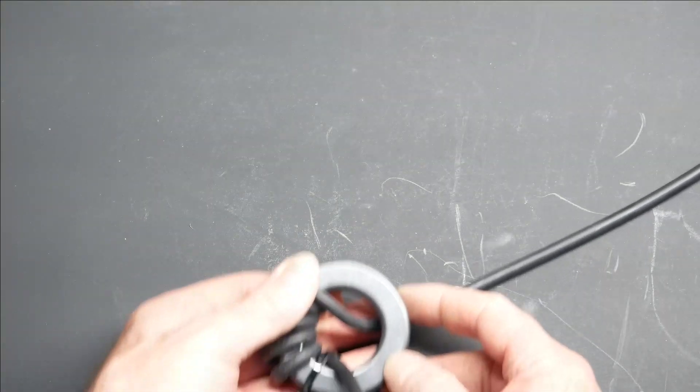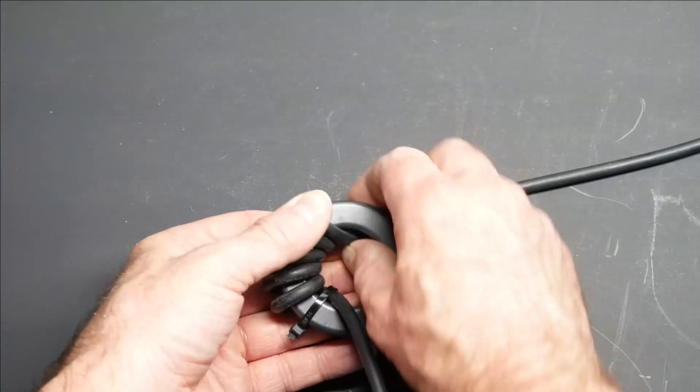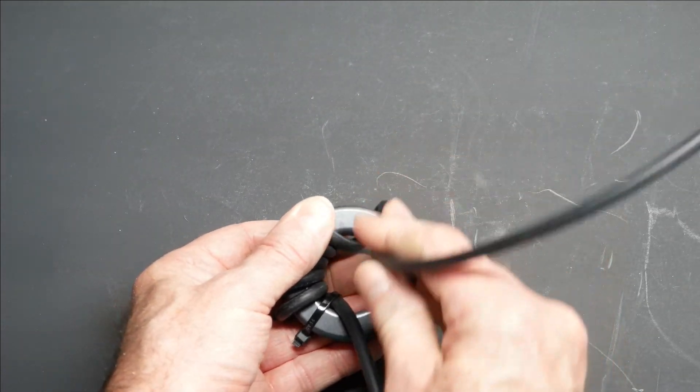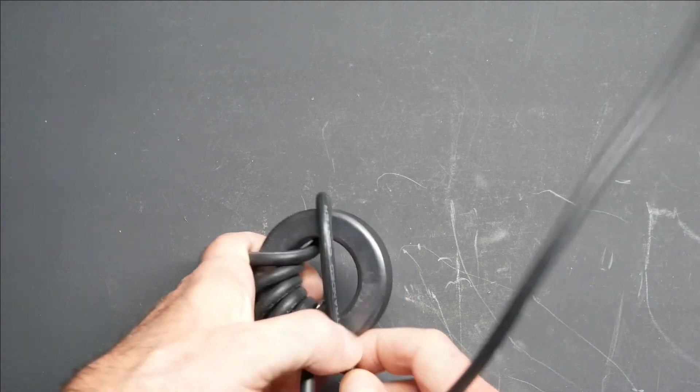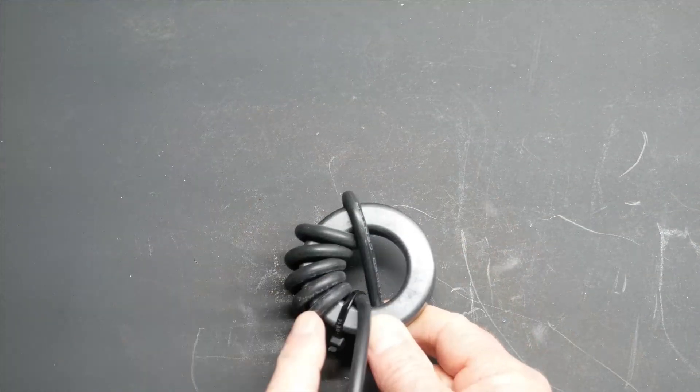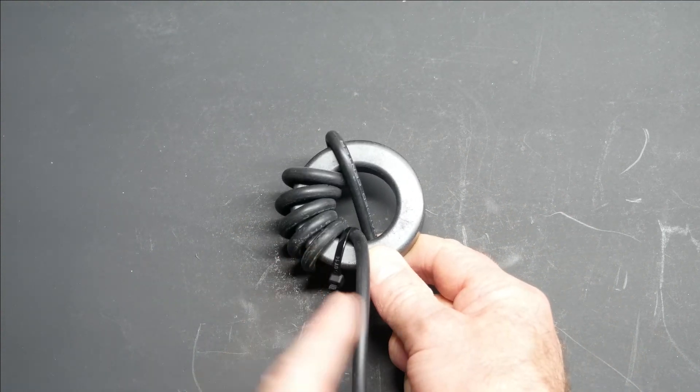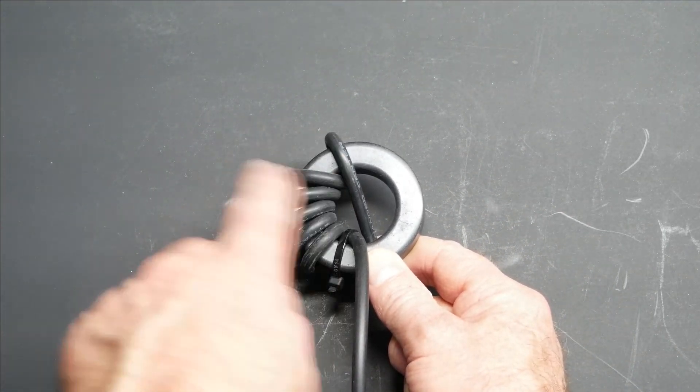So we have one, two, three, four, five, six, and then what we're going to do is we're going to come over. And now you notice that we're going clockwise. So these are six turns counterclockwise: one, two, three, four, five, six.